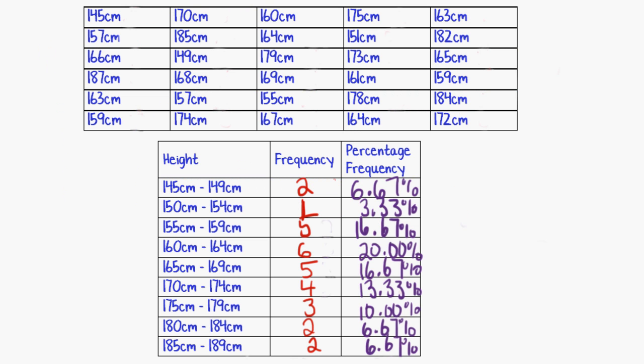One of the reasons that stem plots are useful is because they don't take away the original data. And I'll show you what I mean by that. Here is a table of data that we had in one of the questions in a previous video. And here we constructed a frequency table using that data. But what's been lost in breaking this down into a frequency table is some of the original information.